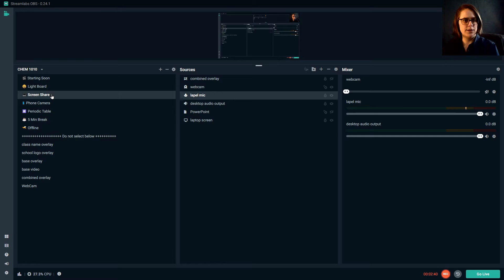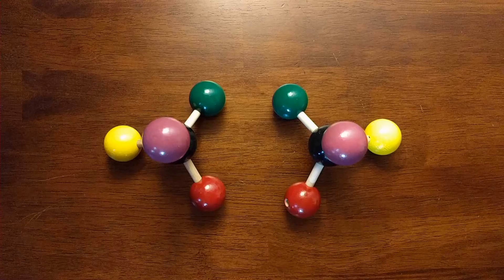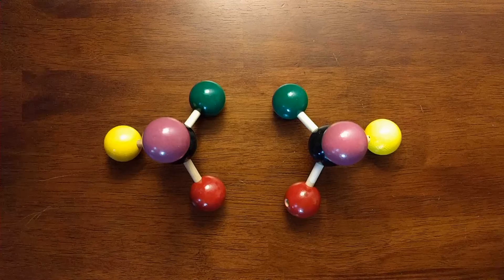Light board, if I click here, it would switch cameras and show my light board. Screen share is where I am now. Phone camera, this is my old cell phone that I'm using as a document camera. So I'm going to switch to this now.